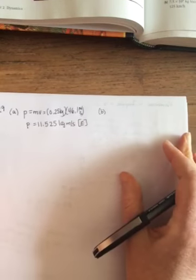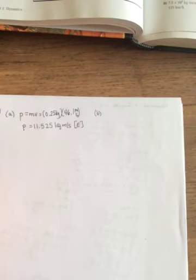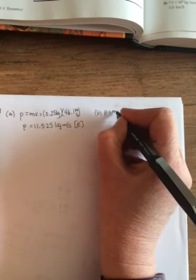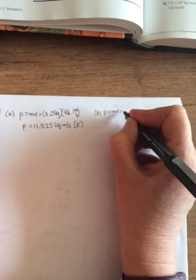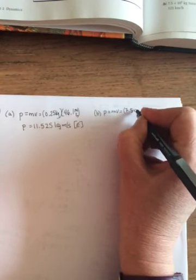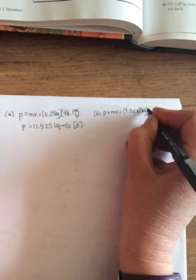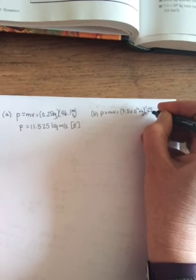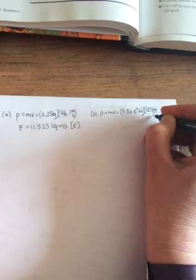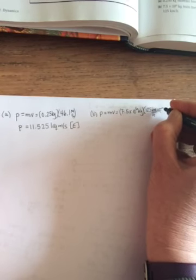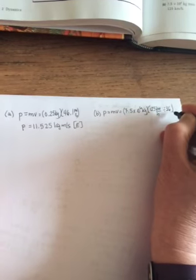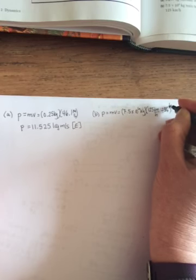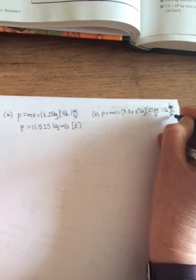Part B, a 7.5 times 10 to the 6 kilogram train traveling west at 125 kilometers per hour. So again, P equals MV. So 7.5 times 10 to the 6 kilograms. And 125 kilometers per hour, you have to change to meters per second. So 125 kilometers per hour, and you're going to divide that by 3.6 to get meters per second.